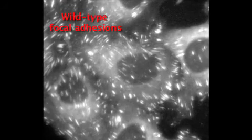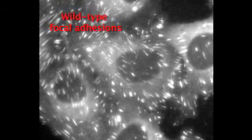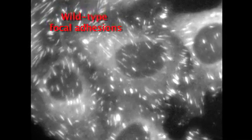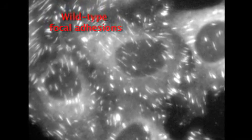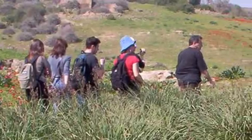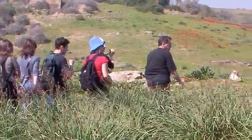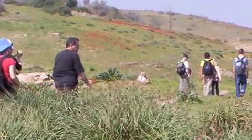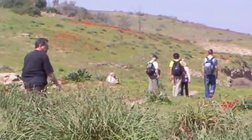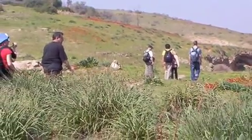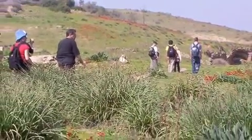Many of the components of focal adhesions bind to cytoskeletal proteins, linking the cell's external environment to its internal architecture. Benjamin Geiger and his team from the Weizmann Institute of Science in Rehovot, Israel, are searching for components of focal adhesions using a combination of high-throughput screening and systems biology approaches.